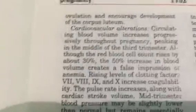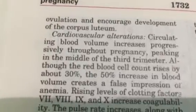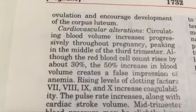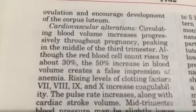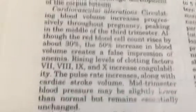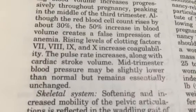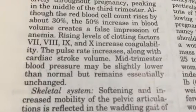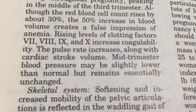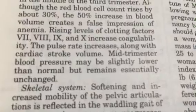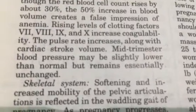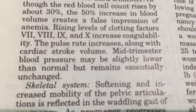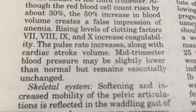Pituitary activity increases, producing placental hormones that prevent ovulation and encourage development of the corpus luteum. Cardiovascular alterations: Blood volume increases progressively throughout pregnancy, peaking in the middle of the third trimester. Although the red blood cell count rises by about 30%, the 50% increase in blood volume creates a false impression of anemia. Rising levels of clotting factors 7, 8, 9, and 10 increase coagulability. The pulse rate increases along with the cardiac stroke volume. Mid-trimester blood pressure may be slightly lower than normal but remains essentially unchanged.